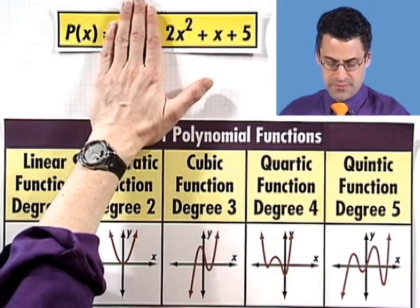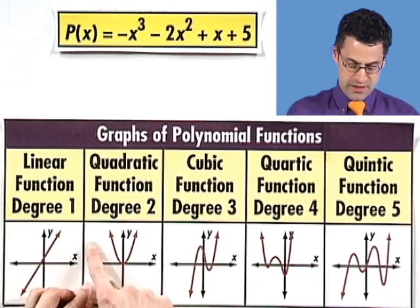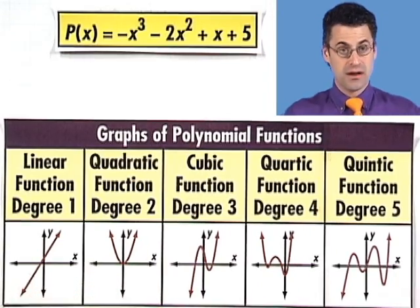If we have degree 2, then we have a quadratic and we have a parabola. Again, this is just a generic parabola. It could be anywhere; it could even be pointing down.